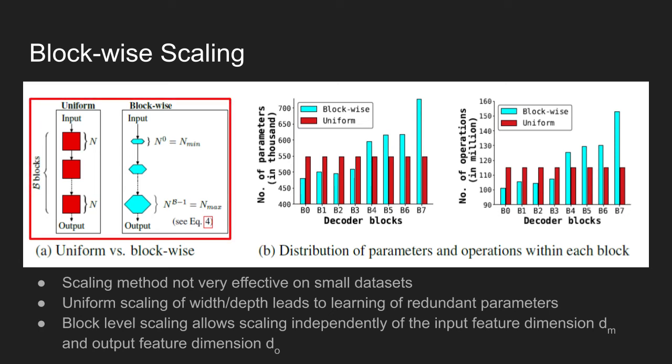As shown in figure A, instead of uniformly scaling the blocks, two configuration parameters are used to scale the blocks. Value N controls the number of group transformation layers and the width multiplier M_W controls the width of each group transformation block. The configuration parameters allow scaling of the model independently of the input feature dimension d_in and output feature dimension d_o. The chart on the right shows the distribution of parameters and operations within each block. The red bars represent the number of parameters when using uniform scaling, and the blue bars show the number of parameters when using block-wise scaling method.